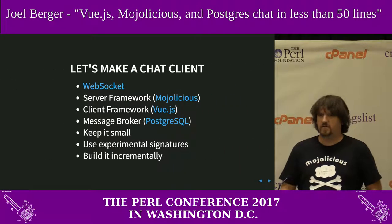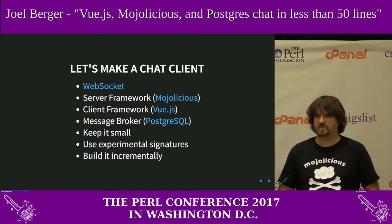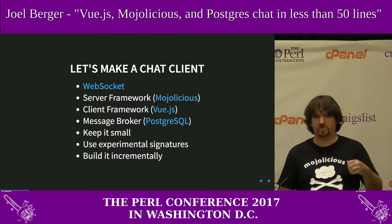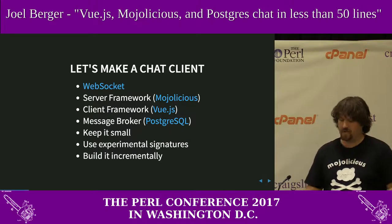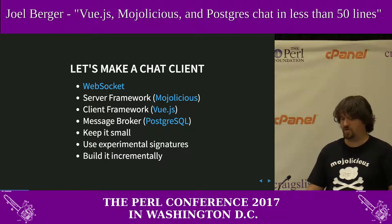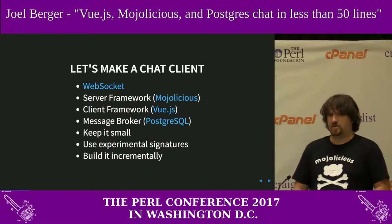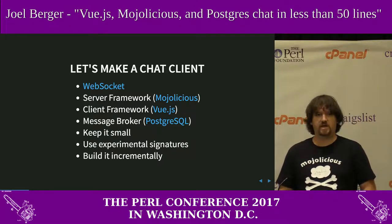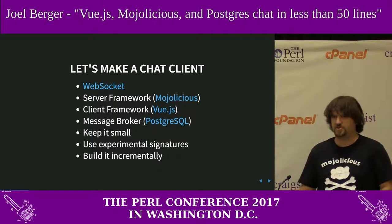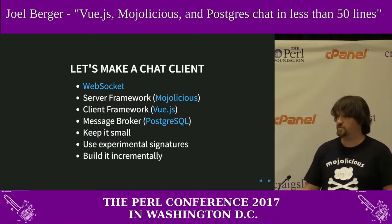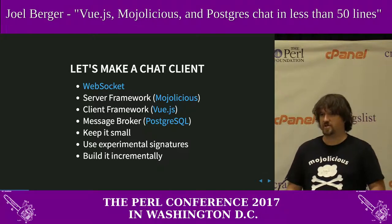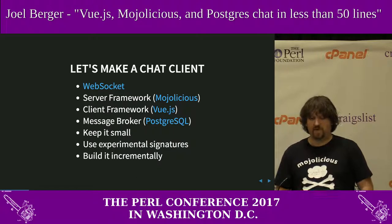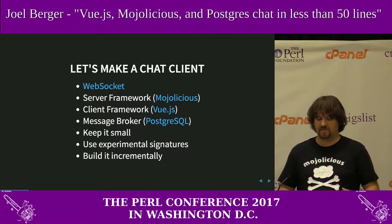Let's make a chat client. Chat clients are fun because they demonstrate a lot of different technologies all at the same time: WebSockets — the transport with server push from your back end. Of course you need a server, so I'm going to use Mojolicious. We're going to use a front-end client framework because it's the new thing to do, and Vue.js makes it pretty nice. I'm also going to show you why you need a message broker — most people skip that step in a talk of this size, but I'm not going to.